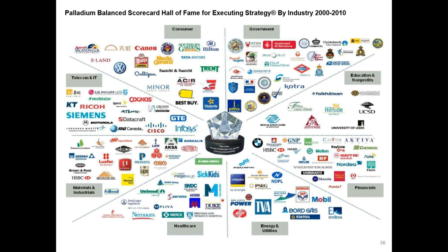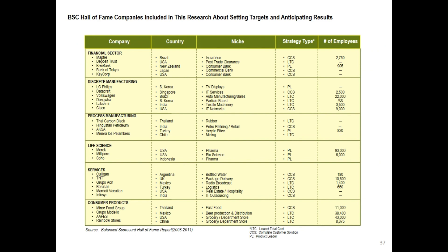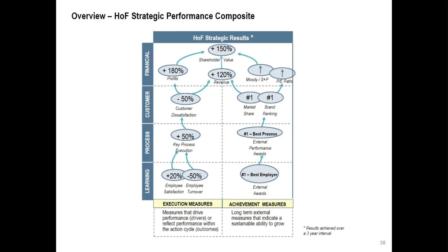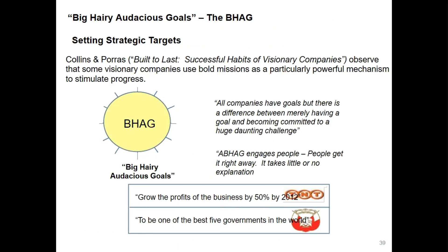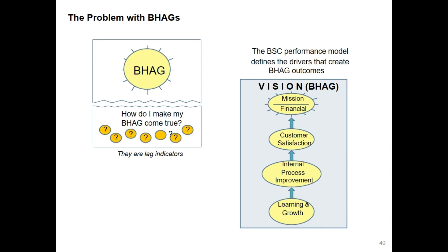You can see the Hall of Fame of strategy execution through Palladium. What is a BHAG — Big Hairy Audacious Goal? Collins and Porras in their book 'Built to Last' observe that some visionary companies use bold missions as a powerful mechanism to stimulate progress. There is a difference between merely having a goal and becoming committed to a huge, daunting challenge. A BHAG engages people immediately — for example, 'grow the profits of the business by 50% by 2024' or 'be one of the best five governments in the world.' The problem with BHAGs is they are lag indicators; the BSC performance model defines the drivers that create BHAG outcomes.